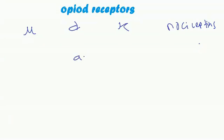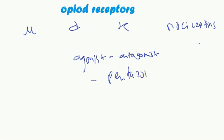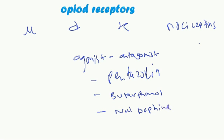Some of the mixed agonists and antagonists of these receptors are pentazocine, butorphanol, nalbuphine, and nalorphine.